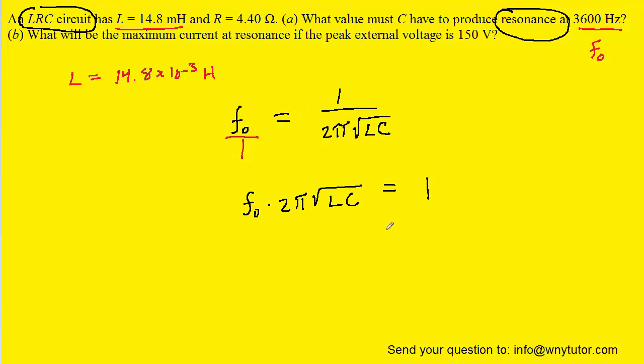We could then divide both sides of the equation by the term F₀ 2 pi. We could next square both sides of the equation. When we square the left-hand side of the equation, we will just end up with L times C.